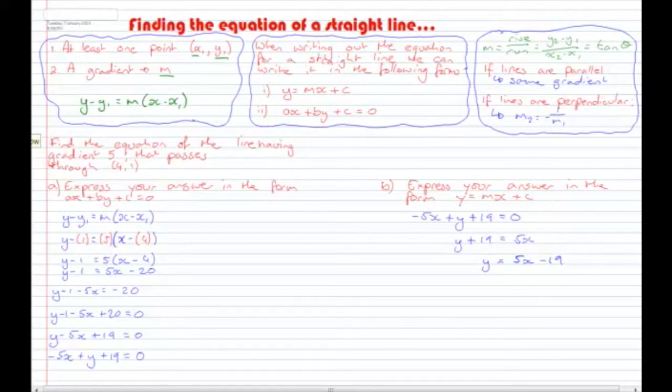Okay, so the question says this: Find the equation of the line having gradient 5 that passes through the point (4, 1). Alright, so the gradient is 5, passing through the point (4, 1).